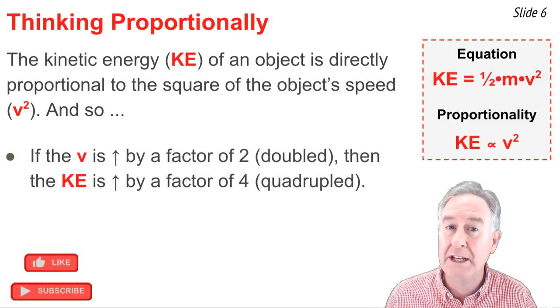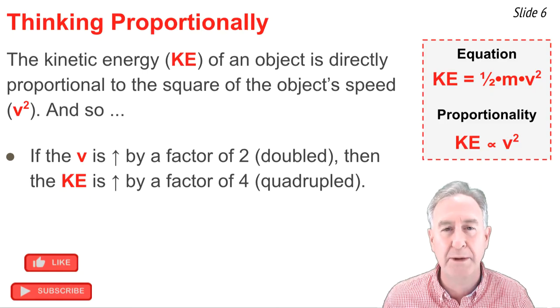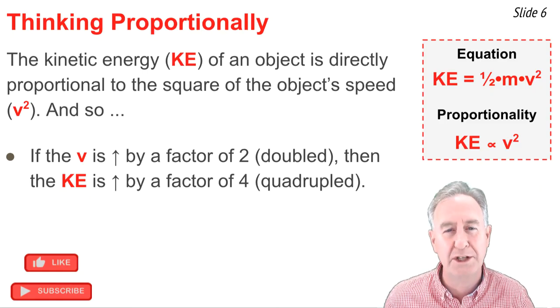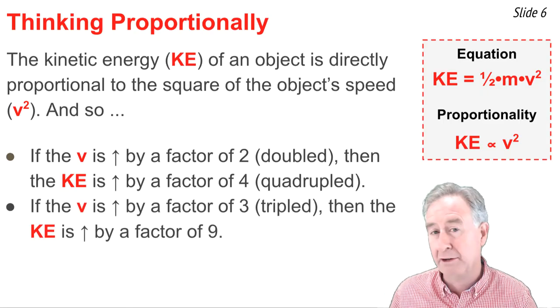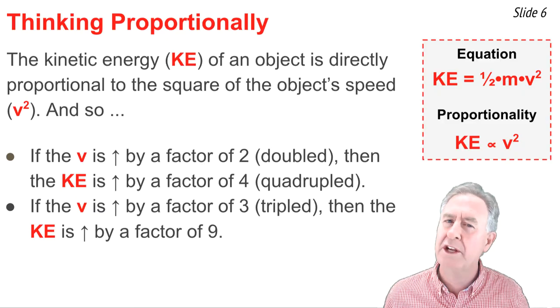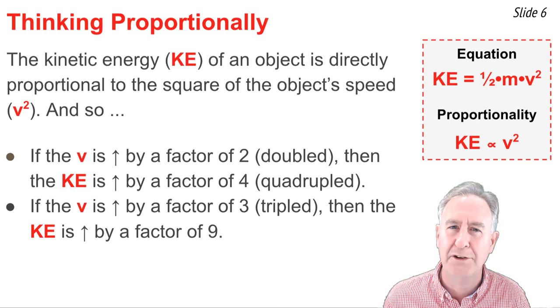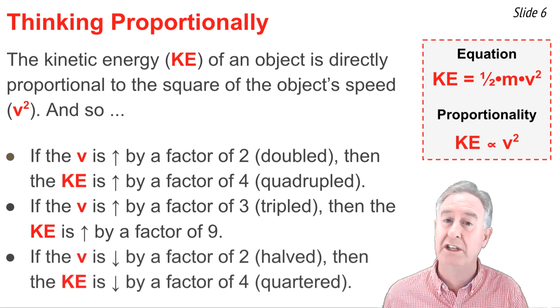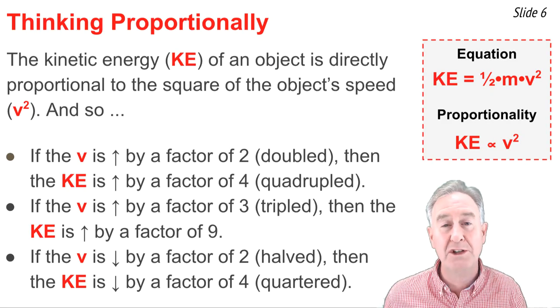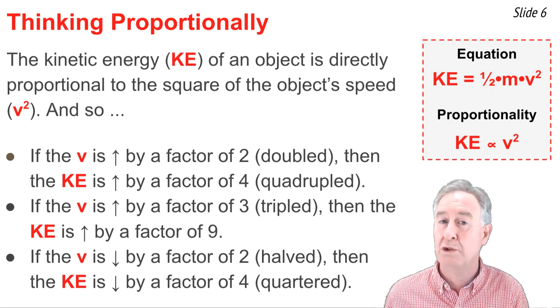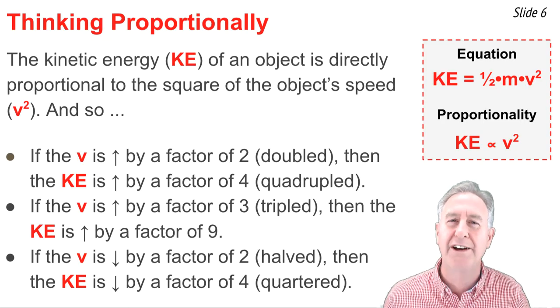if over the course of a motion, the speed of an object is increased by a factor of 2, or doubled, then we would expect that the kinetic energy would be increased by a factor of 4, or quadrupled. And if the speed of an object is increased by a factor of 3, or tripled, you would expect that the kinetic energy would be increased by a factor of 3 squared, or by a factor of 9. And finally, if the speed happened to decrease by a factor of 2, like if it were halved, then you would expect the kinetic energy to decrease by a factor of 2 squared. That is, it would decrease by a factor of 4 and become one-fourth of its original value.